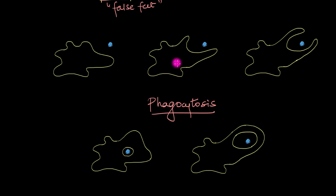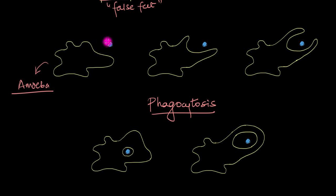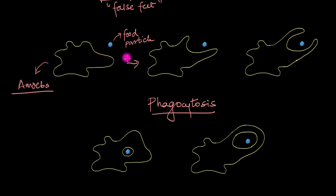I've drawn out a very simplified version of exactly how this phagocytosis process works and how it usually looks. So over here we have our amoeba — this is our amoeboid protozoan — and this blue colored dot is the food particle. What happens during phagocytosis is that the amoeba will start extending its pseudopodia towards the food particle in such a way that, after a point, the pseudopodia will start surrounding the food particle.